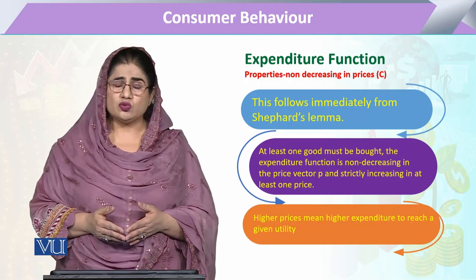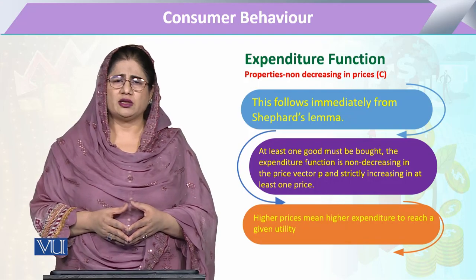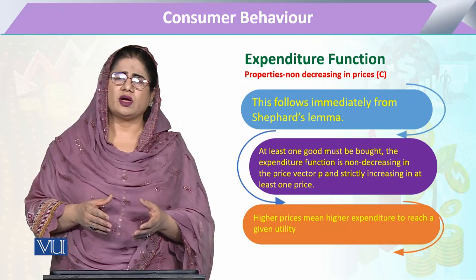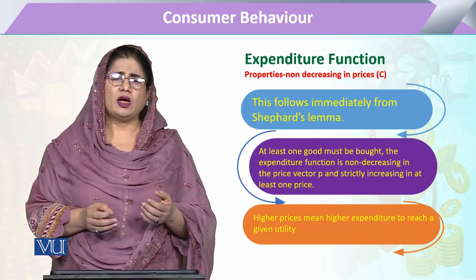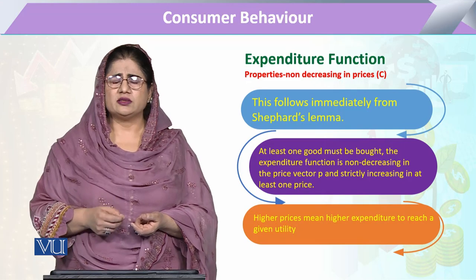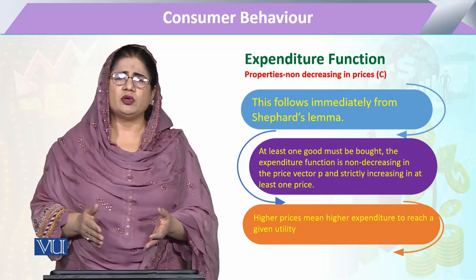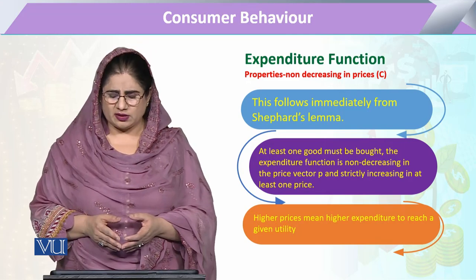Aur isliye jab hum isko agar proof karna chahein to hum properties of Shepherd's lemma ko hi hum istemal karte hain, aur uske tehat hum phir uska comparison kar sakte hain. So agar wo kisi bhi share ko khareed nahi karta jiski price kam bhi ho sakti hai, zyada bhi ho sakti hai mukhtalif auqat mein, to hum is property ko proof nahi kar sakte.